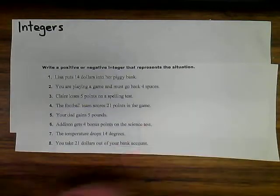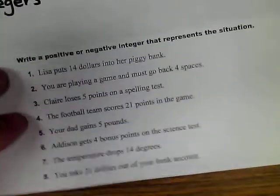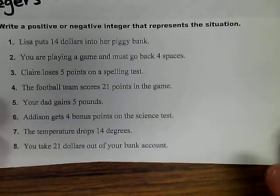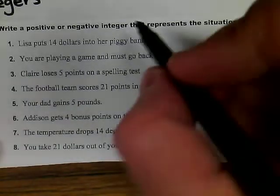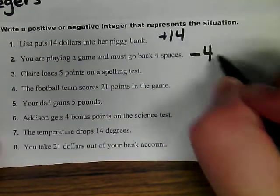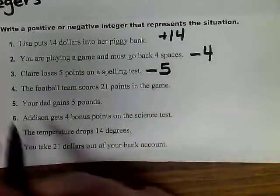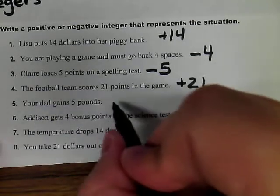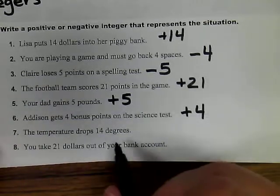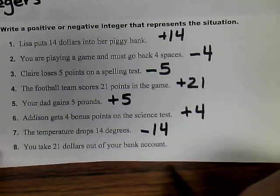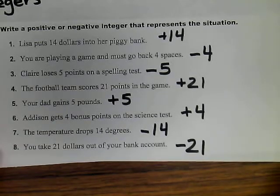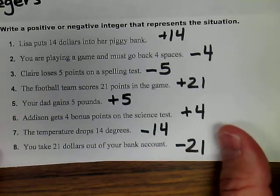One other main focus we're going to be doing during this unit with integers is identifying a positive or negative integer that would represent a situation. Here are some situations that include positive or negative whole numbers. Lisa puts $14 in her piggy bank, that would be positive 14. You're playing a game and must go back four spaces, this would be a negative situation. Claire loses five points on a spelling test. The football team scores 21 points. Your dad gains five pounds. Addison gets four bonus points on the science test. The temperature drops 14 degrees. You take $21 out of your bank account. These are all integer situations that are real life connections. You want to realize how much their relationship with zero has to do with these situations.